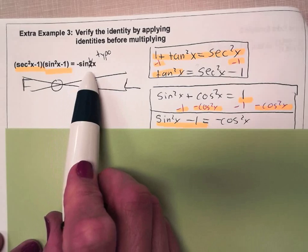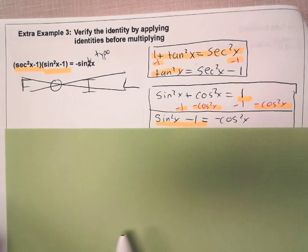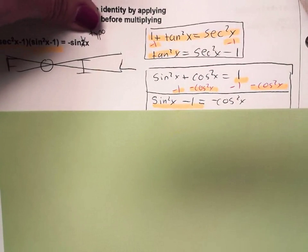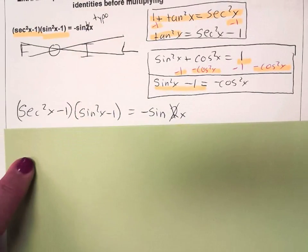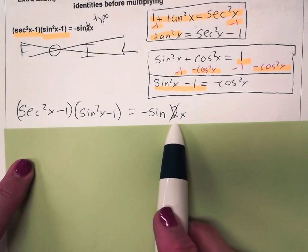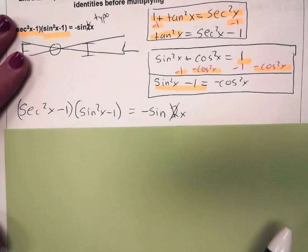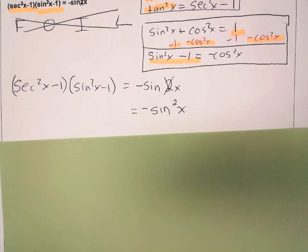Now this here, this big 2, that's a typo. This whole expression is not supposed to be equal to -sin(2x). It's supposed to be -sin²x.